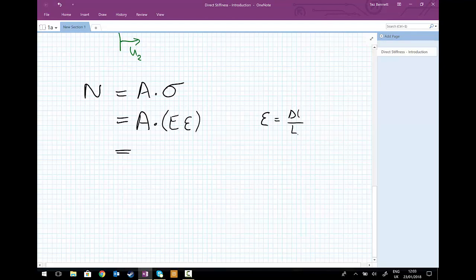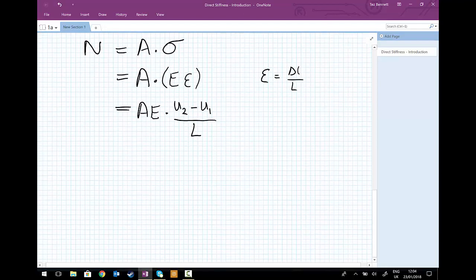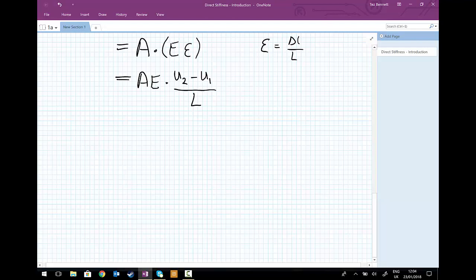And we're going to rewrite that in terms of the displacements U2 and U1. So delta L we're going to re-express. First of all, we've got cross-sectional area multiplied by Young's modulus, multiplied by the strain. And the strain, we could say, is U2 minus U1 divided by the original length of the element L. And finally, I'm going to rewrite this equation, just rearranging it slightly into a format that will be useful later. So the point of N equals AE divided by L multiplied by U2 minus U1. So only just a slight rearrangement of the equation above.